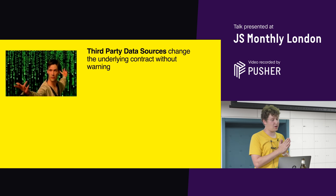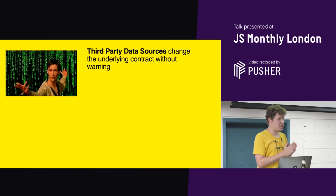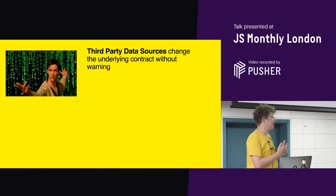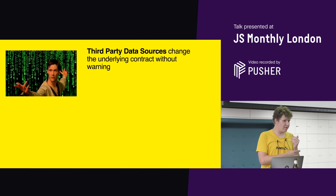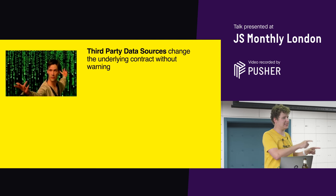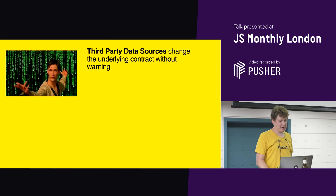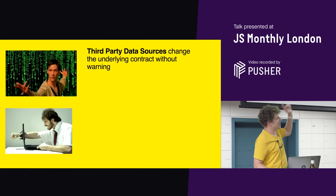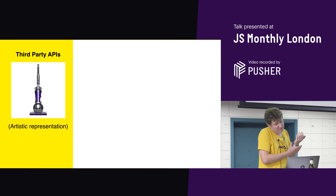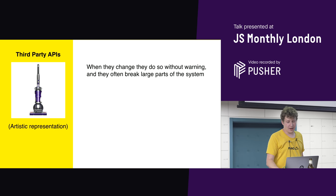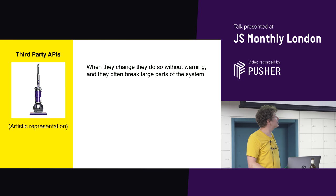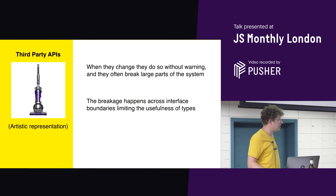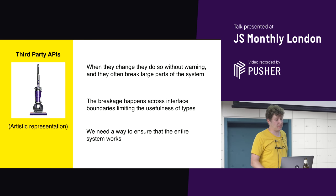Unfortunately, third-party data sources change the underlying contract without warning. Sometimes changes are benign — they add a key. Sometimes less so: Google Places quite recently changed the format for reverse geocode on a place from an array of objects to an object with keys that are arrays, which completely broke our entire system. No warning, no notice, not even an email. The breakage happens across interface boundaries, which limits the usefulness of type systems, and we really need a way to ensure the system continues to work.